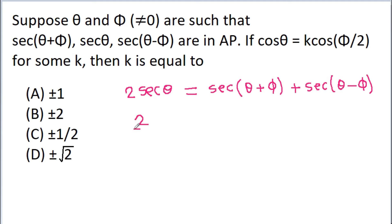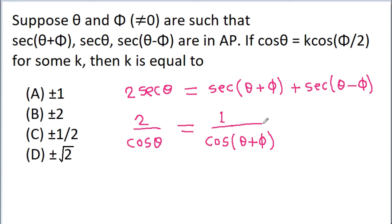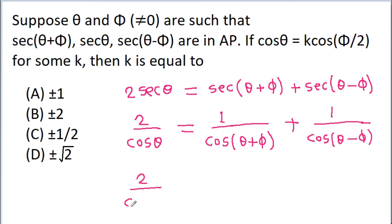And 2·sec theta is 2/cos theta, which is equal to 1/cos(theta + phi) plus 1/cos(theta - phi). So 2/cos theta is equal to [cos(theta - phi) + cos(theta + phi)] / [cos(theta + phi)·cos(theta - phi)].